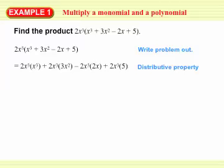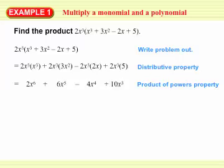2x cubed times x cubed is the first term. 2x cubed times 3x squared is the second term, and so on. To simplify each of these individual terms, we need to use the properties of exponents from Chapter 8. If you recall, we had the product of powers property — that's when we multiply together two things that have the same base but different exponents. The first term, 2x cubed times x cubed, multiplies out to 2x to the 6th, adding those exponents. The second term: the 2 and the 3 multiply to get 6, and x cubed and x squared multiply to get x to the 5th, and so on. This is as simplified as we can write this answer. Notice that we can't add together unlike terms, and there are no like terms in this expression.